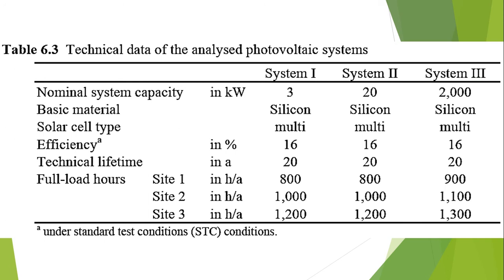Currently, grid-connected photovoltaic power generation is mainly found by means of roof-mounted systems, as well as, with increasing importance, photovoltaic power plants. A typical photovoltaic system with an electrical nominal capacity of 3.0 kilowatts installed on a slanting roof will be analyzed. Additionally, a system located on a horizontal roof of an insulating building with an installed capacity of 20 kilowatts is taken into consideration to cover the overall market.